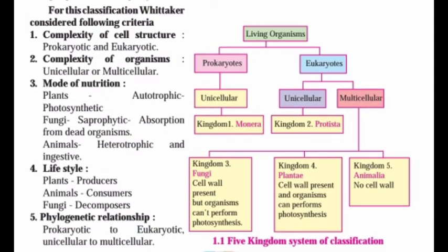Whittaker considered the following criteria for classification. First, complexity of cell structure, divided into prokaryotic and eukaryotic. Prokaryotic organisms are unicellular, while eukaryotic can be unicellular or multicellular. Second, complexity of organism — unicellular meaning one cell, or multicellular meaning more than one cell. Third, mode of nutrition: plants are autotrophic and photosynthetic; fungi are saprotrophic, absorbing nutrients from dead organisms; animals are heterotrophic and ingestive.